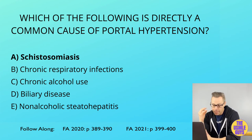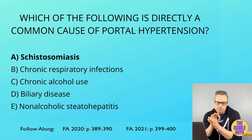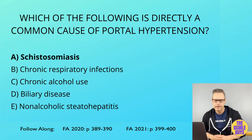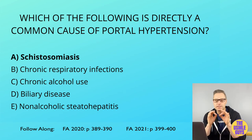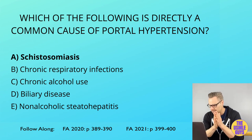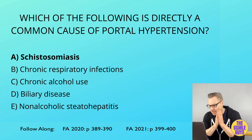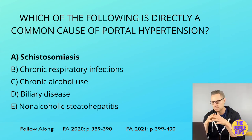One complication of cirrhosis to keep in mind for your exam is spontaneous bacterial peritonitis — a potentially fatal bacterial infection most commonly caused by gram-negative organisms. Watch for abdominal pain, ileus, and worsening encephalopathy in addition to common signs of infection like fever and chills. Diagnosis is via paracentesis with an ascitic fluid ANC of over 250 cells per mm³. When you suspect this, administer a third-generation cephalosporin empirically.